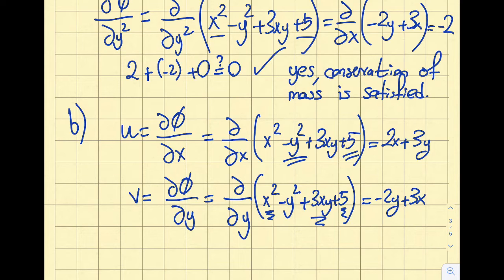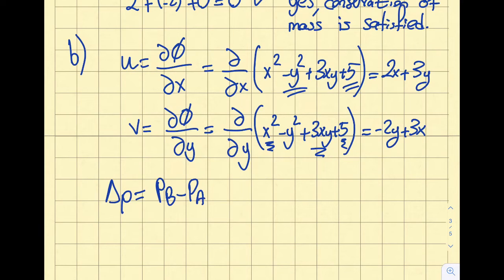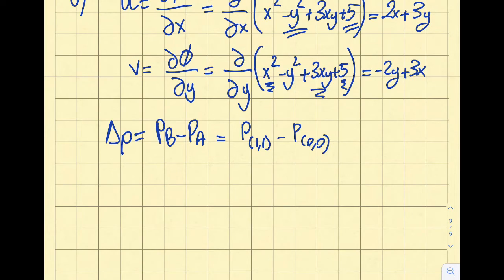Now I have the velocity components u and v in the x and y directions respectively. The question asks for ΔP, but isn't specific about the sign convention, so I'll arbitrarily compute p_B − p_A, i.e., p(1,1) − p(0,0). Before proceeding I need to find the velocities at both points since Bernoulli's equation contains a velocity term.